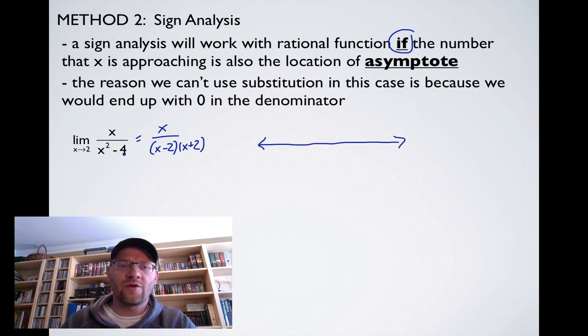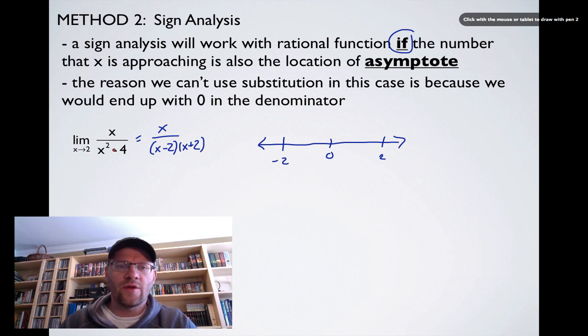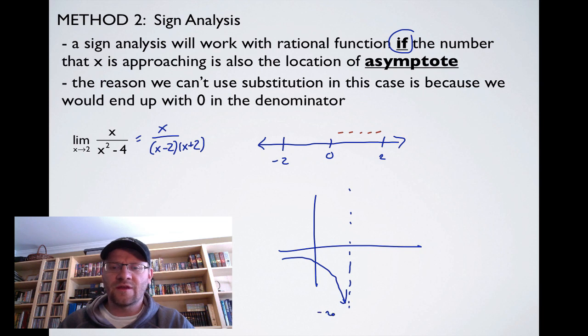We need to do a sign analysis. We've done them before. We don't really care about the fact that the x-intercept here is 0. We know that there's a vertical asymptote at negative 2, and we know that there's one at positive 2. But because we're asked to find the limit as x approaches 2, we're just going to be concerned with this part of the sign analysis right here. We're going to plug in a number between 0 and 2 into this function, find out if it's positive or negative. So if I plug in a 1, I get 1 over 1 minus 4, which is negative.